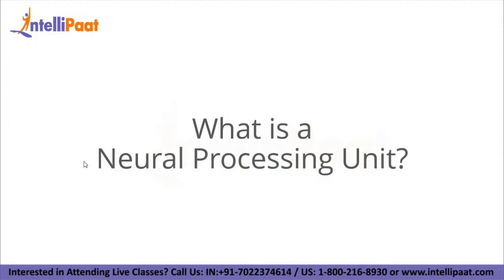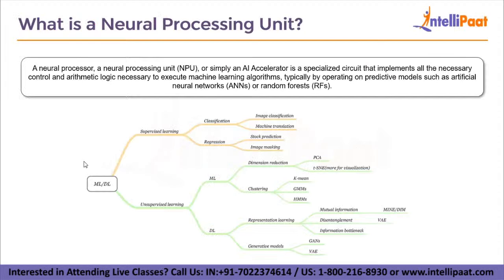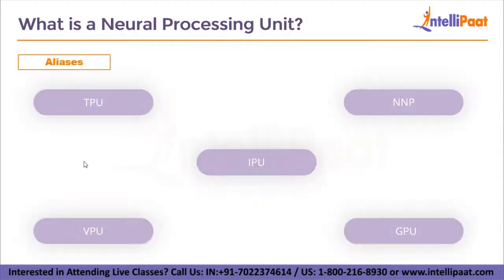What exactly is a Neural Processing Unit? A neural processor, or Neural Processing Unit (NPU for short), also called an AI accelerator, is a specialized circuit that implements all the necessary control and arithmetic logic to execute machine learning algorithms, typically by operating on predictive models such as artificial neural networks or random forests. NPUs sometimes go by similar names, such as Tensor Processing Unit (TPU), Neural Network Processors (NNPs), Intelligence Processing Unit, Vision Processing Unit (VPU), and Graph Processing Unit.